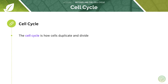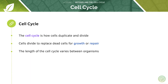Cells divide in a series of stages called the cell cycle, and you've got to be able to describe these stages. The cell cycle is how cells duplicate and divide — it's a set of steps that take place in cell division. Cells need to be dividing all the time to replace dead cells, for growth and for repair. The length of the cell cycle can vary between organisms and depends on the type of cell — for example, hair follicles or skin cells have a quicker cell cycle.